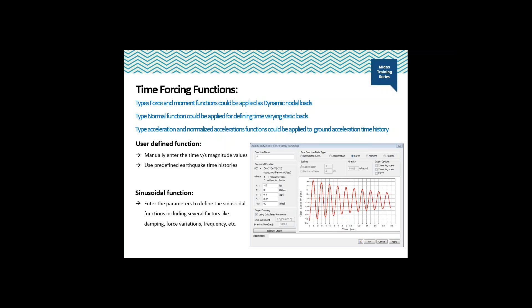The other option is the sinusoidal function, where you enter parameters as shown in the image: the initial force, increment or decrement in force, the number of cycles per second, the damping, and the phase angle. To perform periodic linear analysis of a frame structure due to machine vibration, a force or moment type function can be used for dynamic nodal loads.